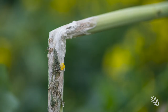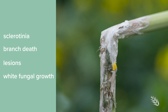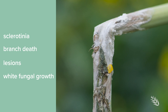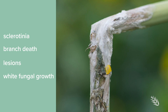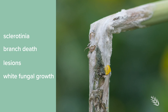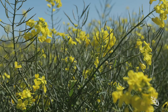Sclerotinia will cause branch death, but you will find lesions on the stem and leaf to identify it, along with white fluffy fungal growth. That's how you can differentiate frost damage versus other biotic factors affecting canola pods.